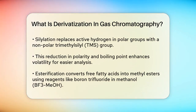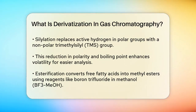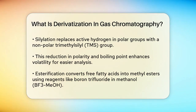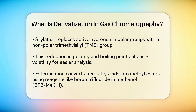To overcome this, you can use a process called silylation. This involves replacing the active hydrogen in these polar groups with a nonpolar trimethylsilyl (TMS) group. This change reduces the compound's polarity and boiling point, making it more volatile and easier to analyze by GC.